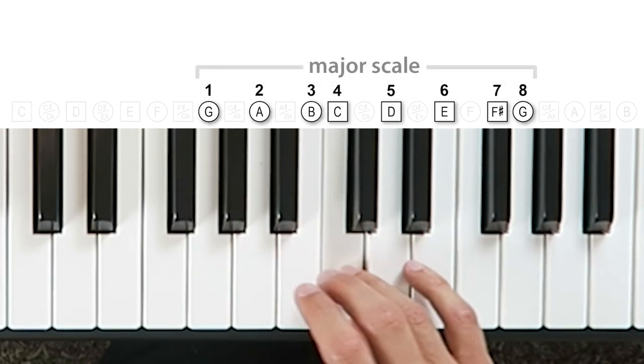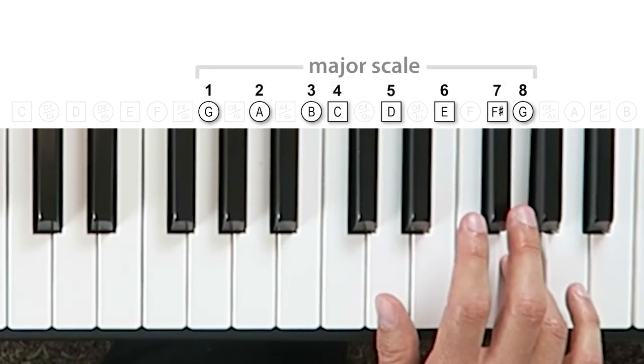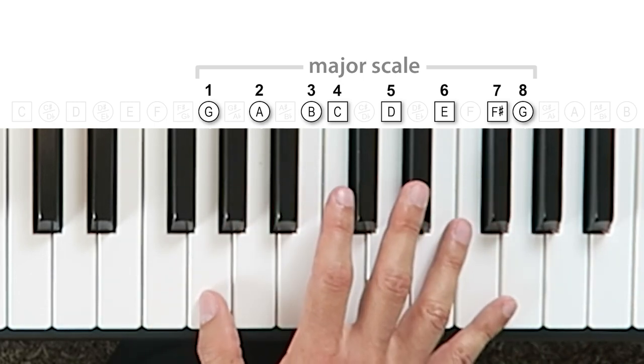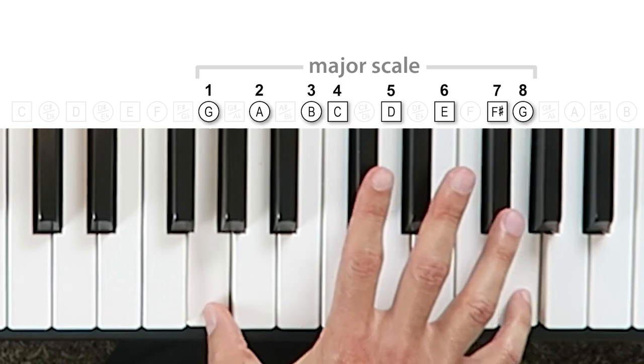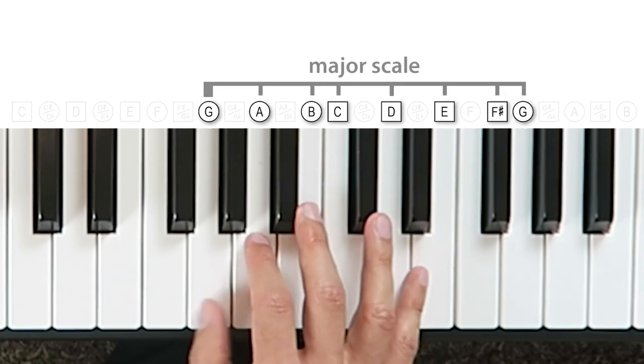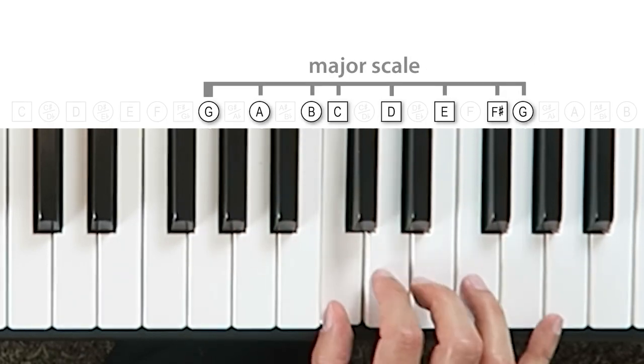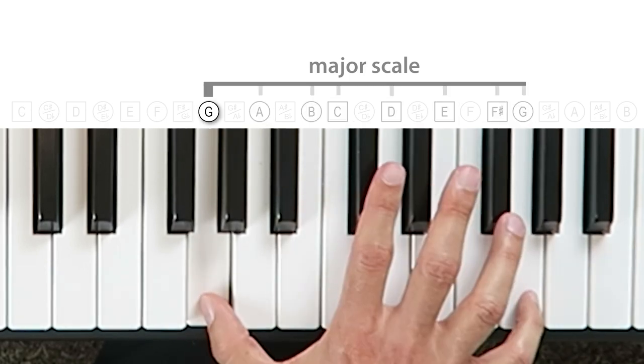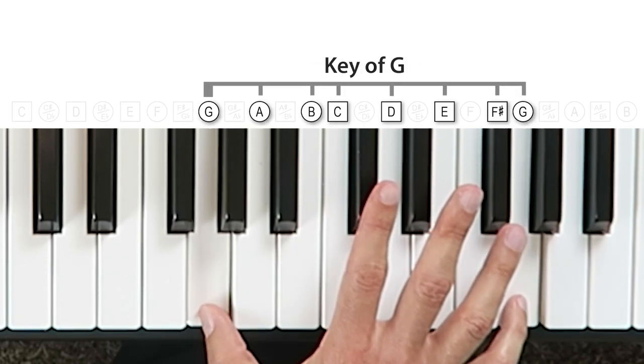This is the same pattern as the C major scale, but starting on a G note, a circle. So the interval shapes are reversed. You have circle, circle, circle, square, square, square, square, circle. And since the G notes are the bookends in this scale, we're in the key of G.